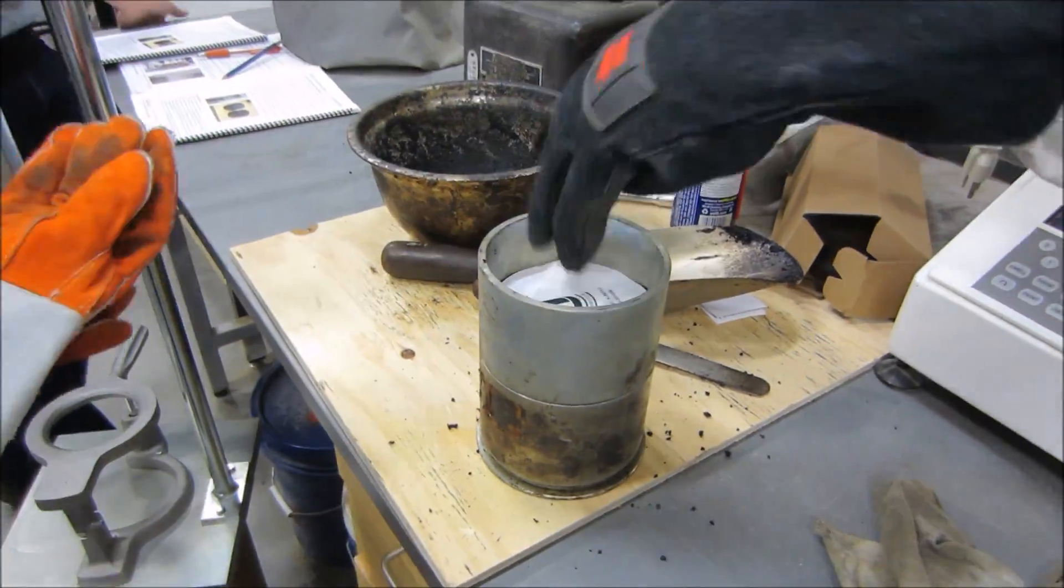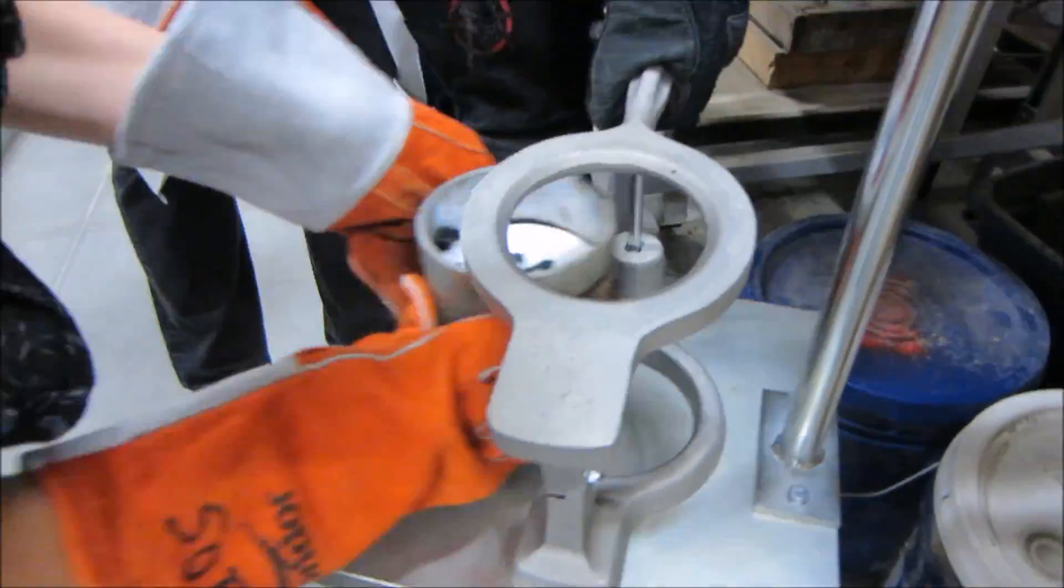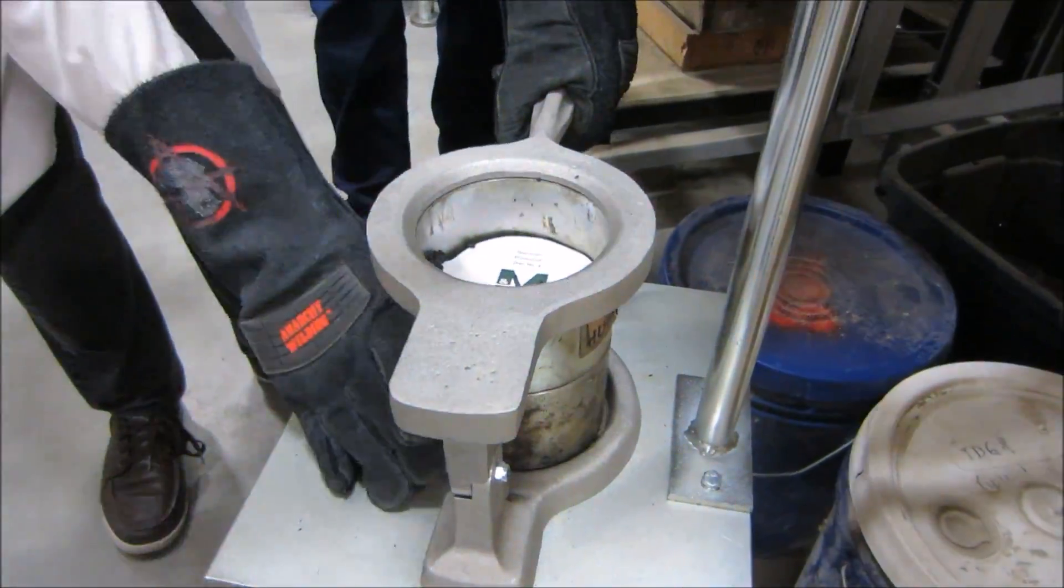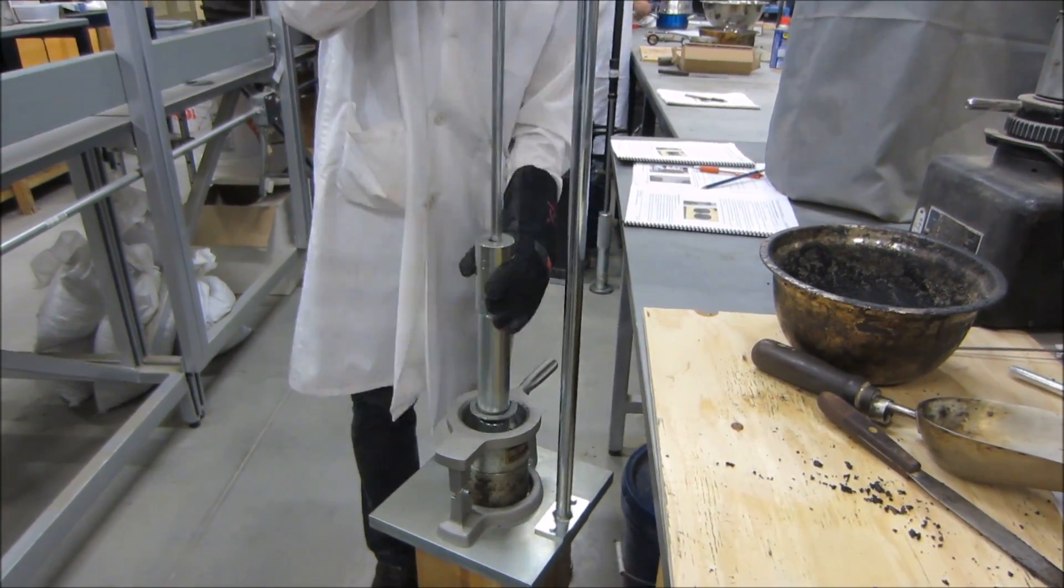Place a piece of release paper on top of the specimen. Place the mold on the pedestal of the Marshall apparatus and secure with the clamp. Apply 50 blows to the specimen using the compacting hammer.